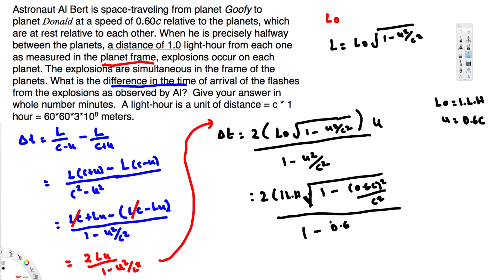And also here we have U, so we have to multiply that one, so this is going to be 0.6c. If you simplify and calculate this one, you should get 90 minutes.